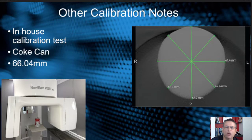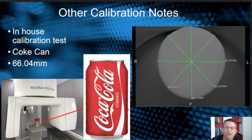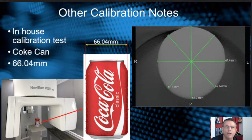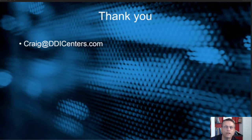There are other calibration notes to be aware of. You can do an in-house calibration test using a Coke can. Coca-Cola tries very hard to make sure their cans are a cylindrical 66.04 millimeters. When you do a scan, you put the can in your machine and take measurements around the circular area to make sure you have a cylindrical, accurate calibration. That's all I'm going to talk about for calibration today. I hope that you do it routinely — please look in your manual for your particular machine's calibration needs. Thank you for logging in to Rad Exchange.